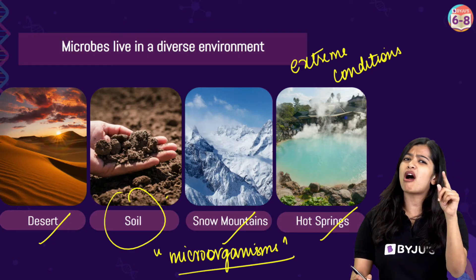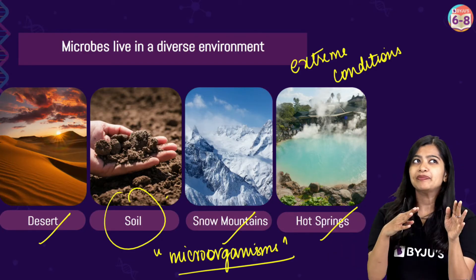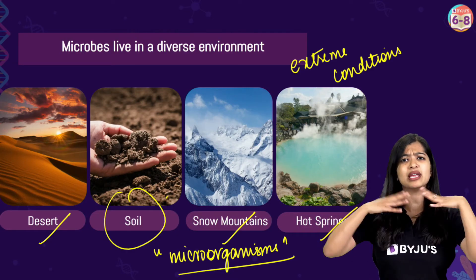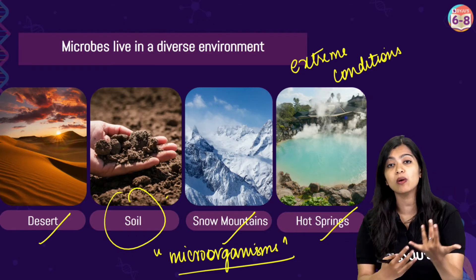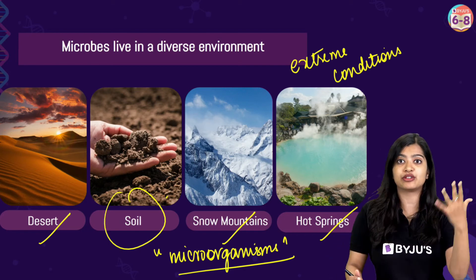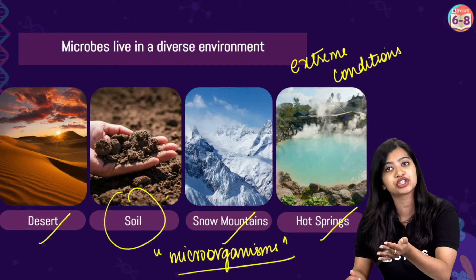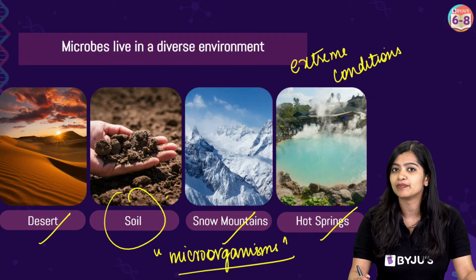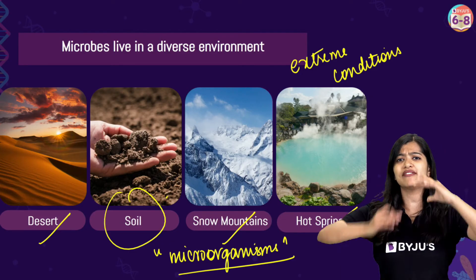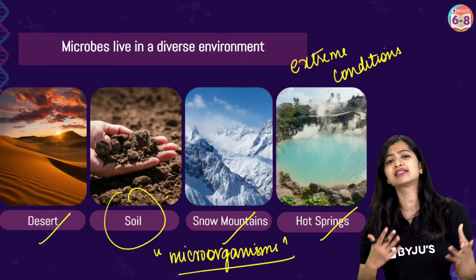Is there only one kind of microorganism, or do they all look the same? Well, it's almost like how we say there are many animals — animals is a very broad way of referring to them, because we know that in animals also we have various kinds: giraffes, lions, insects, earthworms, fishes — they're all diverse and different from one another. Similarly, microbes or microorganisms is a very broad umbrella term, and within it there are various kinds of microorganisms.